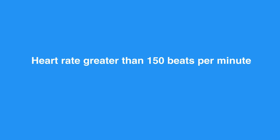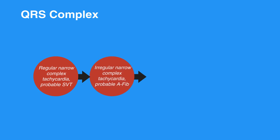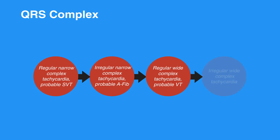A heart rate greater than 150 beats per minute may be symptomatic. The higher the rate, the more likely the symptoms are due to the tachycardia. Assess the QRS complex, which includes regular narrow complex tachycardia or probable SVT, irregular narrow complex tachycardia or probable AFib, regular wide complex tachycardia or probable VT, and irregular wide complex tachycardia.